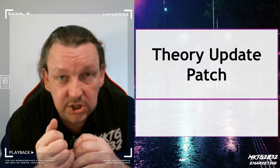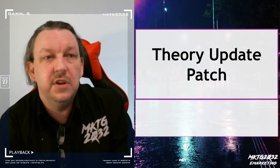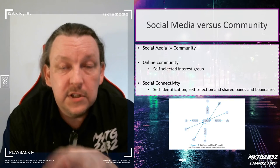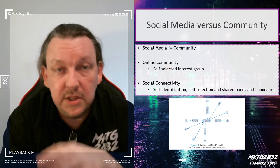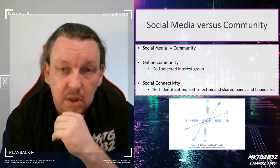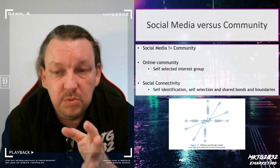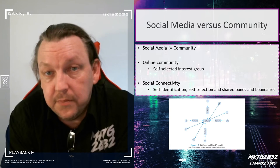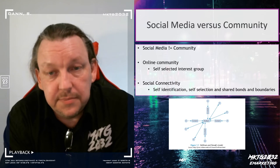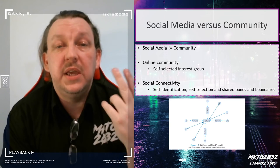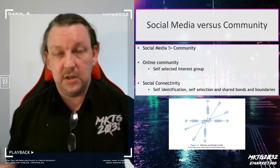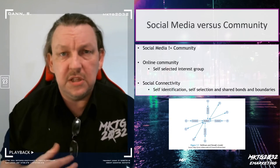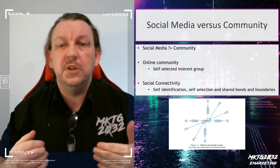Theory update patch. At the start of the season, we talked about a bunch of different theories — I want to mention them in the context of community now. First of all, the one-to-many-to-one. Social media is not, by default, instant community. Without an interaction effect — social media is a platform upon which you can build a community, but it does not immediately create community. You need social connectivity. You need to self-identify that I am part of a community. You need there to be boundaries — you need to know when you're not in the community and when you are in the community.